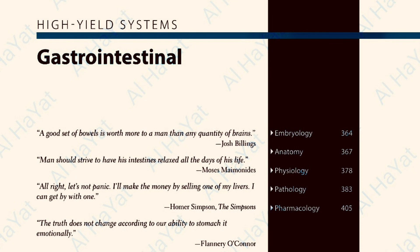The left vagus becomes anteriorly positioned and the right vagus becomes posteriorly positioned. The midgut gives the lower duodenum to the proximal two-thirds of the transverse colon. At six weeks of development, there is physiologic herniation of the midgut through the umbilical ring, and at 10 weeks it returns to the abdominal cavity, rotating around the superior mesenteric artery — approximately 180 degrees before the 10th week and the remaining 90 degrees at the 10th week. The hindgut gives the distal one-third of the transverse colon to the anal canal above the pectinate line.